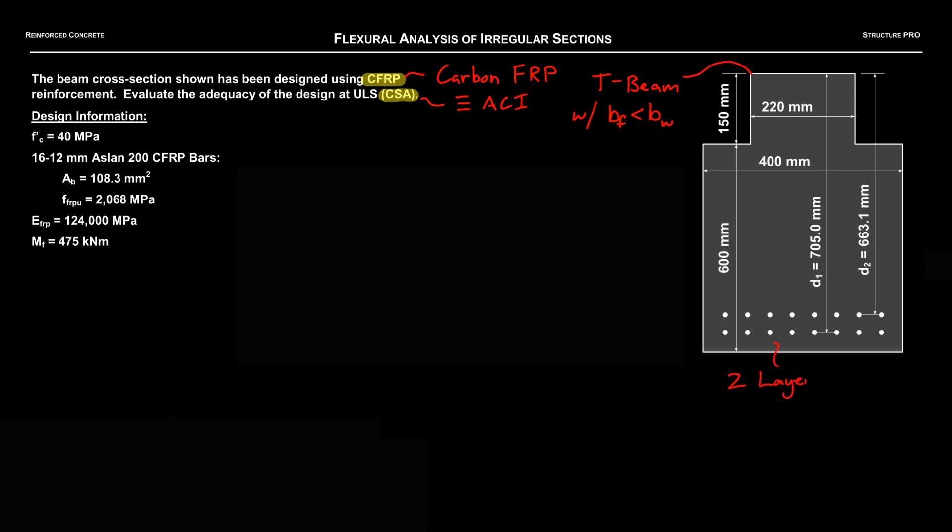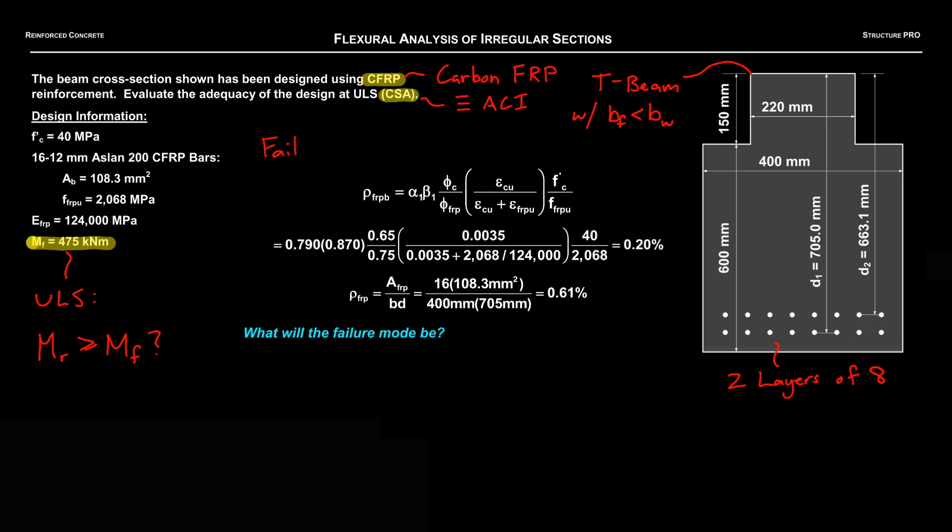So let's make a few notes. Firstly, we got two layers here of CFRP bars and we know with reinforced polymer we have to consider the layers separately in our analysis. We also know we got an MF, a factored moment of 475, so we need to see if MR is greater than that. Alright, so first things first, let's check out the failure mode. What do we think is happening here?